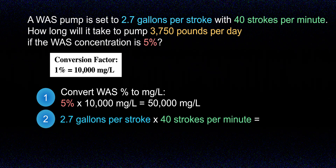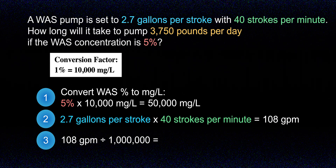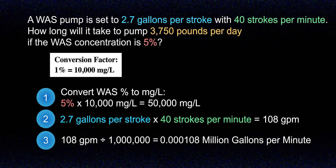For the second step, I'm going to calculate the pumping rate. I solve for this by using the 2.7 gallons per stroke multiplied by 40 strokes per minute, which gives us 108 gallons per minute. For the third step, I want to convert that pumping rate to million gallons per minute so we can use it in a loading rate formula. So let's take our 108 gallons per minute and divide that by 1 million, which equals 0.000108 million gallons per minute.